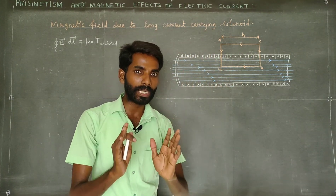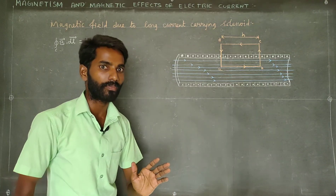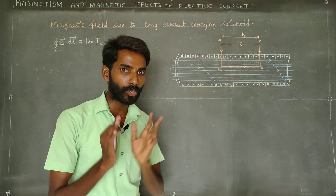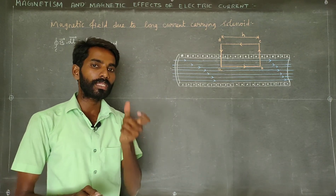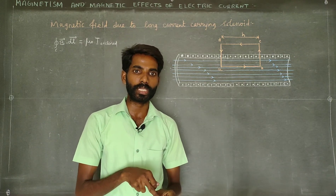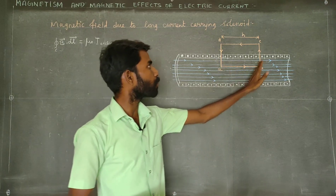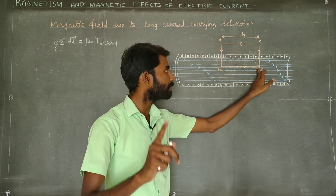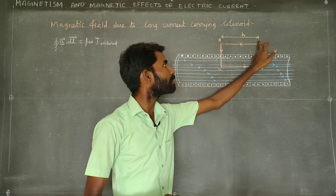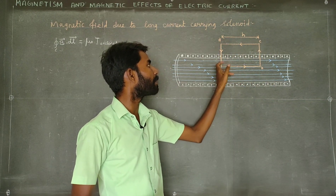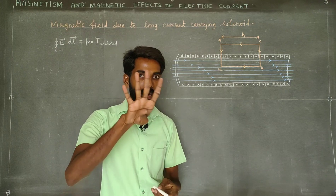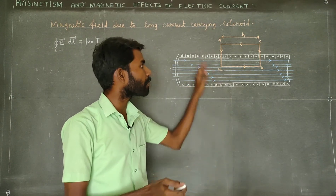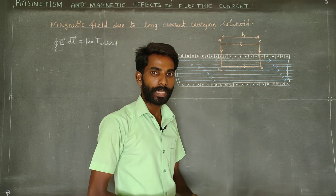If we apply Ampere's Law, we will calculate it using an Amperian loop. It is an imaginary closed loop. In this closed loop, AB is one line, BC is one line, CD is one line, and DA is one line — there are 4 lines forming a closed loop.